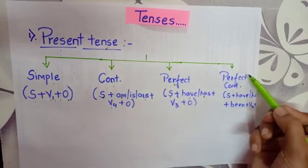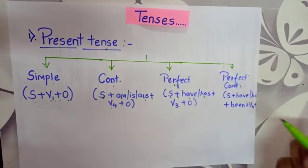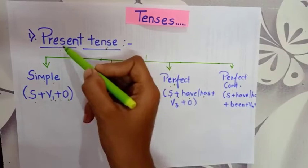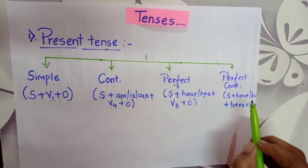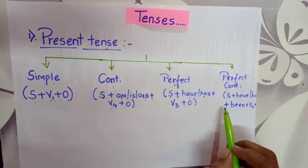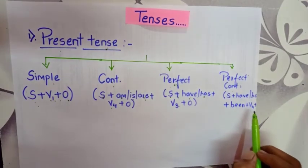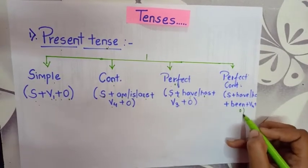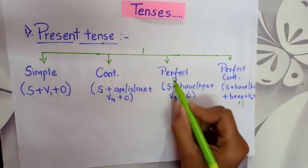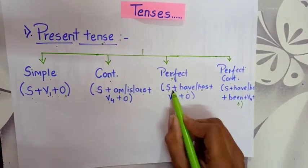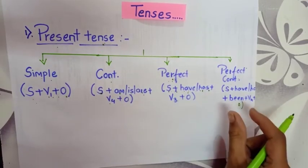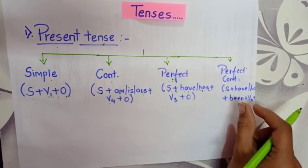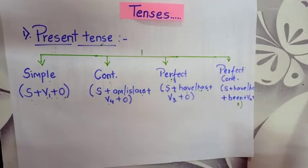Now let's move to perfect continuous present tense. The formula is S plus have/has plus been plus V4 plus object. Here, have and has remain the same as before, but if the sentence contains been and a V4 form, then we can identify it as perfect continuous present tense.